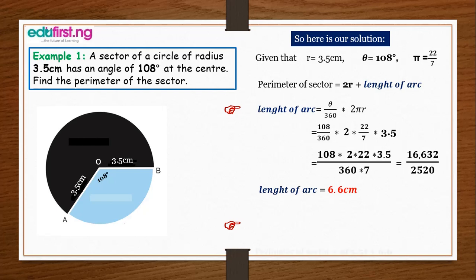Next, we find the perimeter of the sector using the formula. Since we already have the length of arc, we substitute into 2r plus length of arc: 2 × 3.5 + 6.6. Working that out gives us 13.6 cm as the perimeter of the sector.